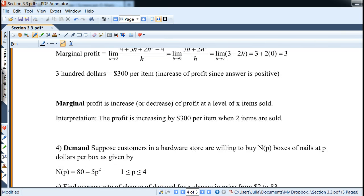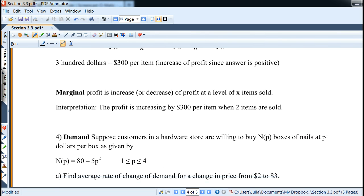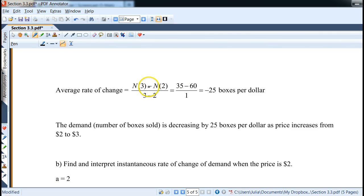Next we'll do one more business application, which is demand. Now, the hardware store, the demand is n(p), which is number of boxes, at price p dollars per box is given by 80 minus 5p squared. And p is between 1 and 4 dollars. We want to find average rate of change with a change in price from 2 to 3 dollars. And the idea is the same, n(3) minus n(2) over 3 minus 2. Now notice how here we get negative rate of change, that's negative 25 boxes per dollar. Now the demand, and this is what we may expect, as the prices increases from 2 to 3 dollars, the demand, or the number of boxes sold, is decreasing by 25 boxes per dollar that they sell, as the price increases from 2 to 3 dollars. So that's kind of the idea with the demand.